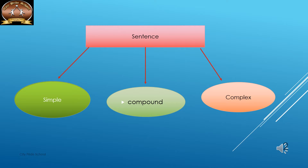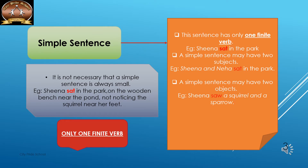In a simple sentence, it will have only one finite verb. A finite verb is a verb that can change its tense or form according to the subject. In a simple sentence you will be able to find only one finite verb. For example, 'I like chocolate' — here 'like' is the finite verb.